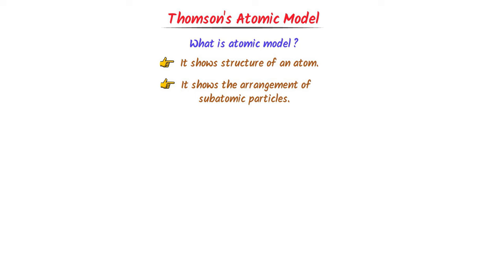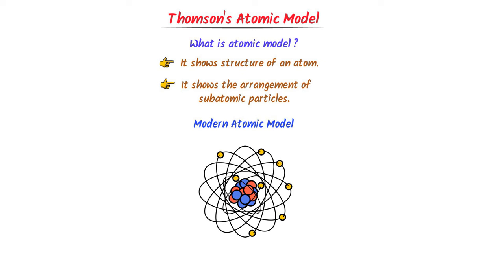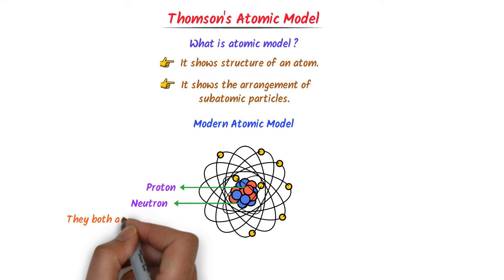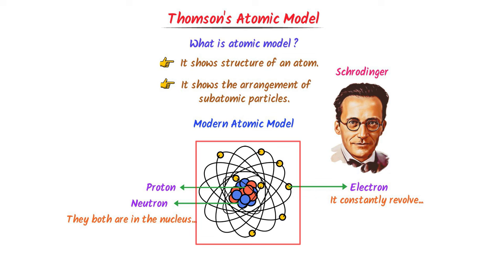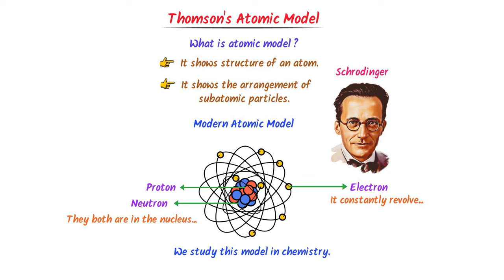For example, consider the modern atomic model. According to the modern atomic model, the nucleus of all atoms contains protons and neutrons. The nucleus is surrounded by a cloud of electrons, meaning that electrons constantly revolve in this cloud around the nucleus. This modern atomic model is presented by Schrödinger, and it is the atomic model we study in modern chemistry — it is 100% acceptable. This atomic model explains the structure of an atom and shows the arrangement of subatomic particles.